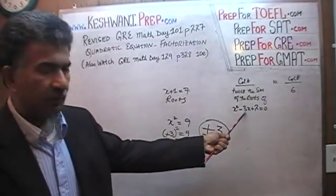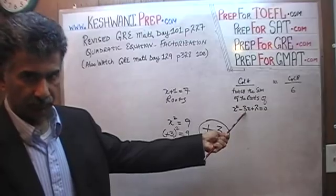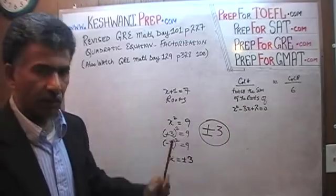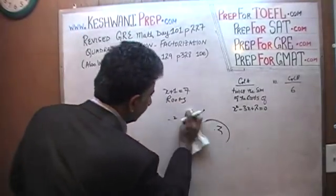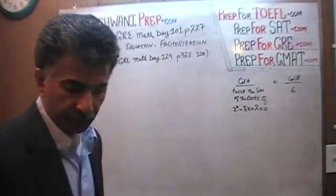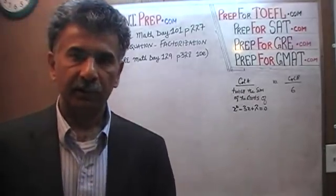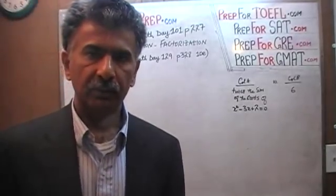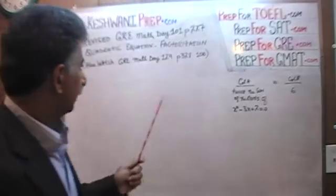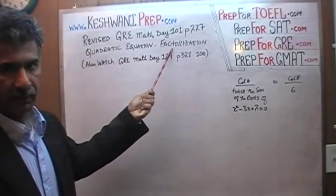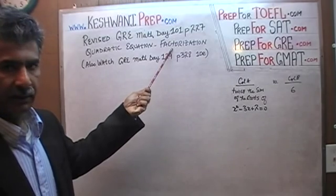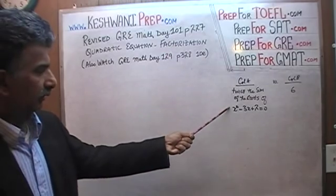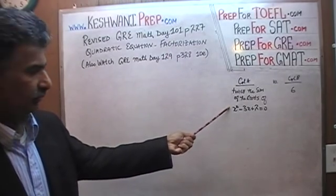Our job is to find the roots of x² − 3x + 2 = 0. There are two of them, obviously, because it's a quadratic equation. There are two ways to do this: one is to use the quadratic formula; another method is factorization, which is what we're going to use right now.